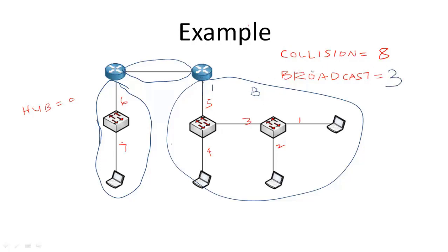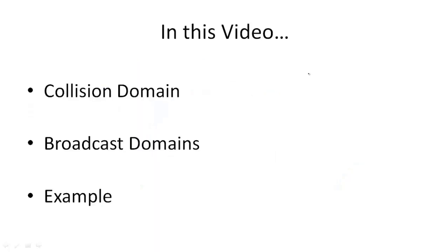So we have eight collision domains and three broadcast domains. I urge you to go ahead and try out more examples for yourself and see if you can identify the number of collision and broadcast domains in a network diagram. In this video we looked at collision domains and what they mean, examined the types of messages — unicast, multicast, and broadcast — and examined broadcast domains and why we have them, using a live example to identify collision and broadcast domains. Thank you very much for watching.